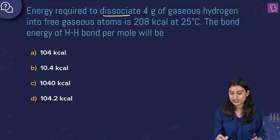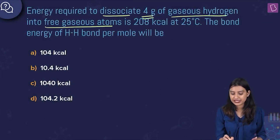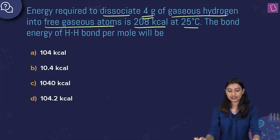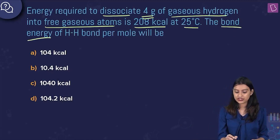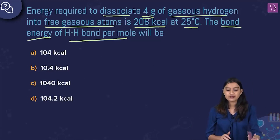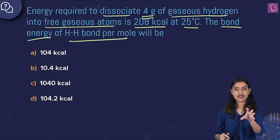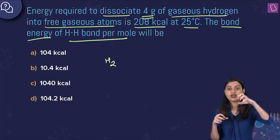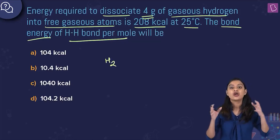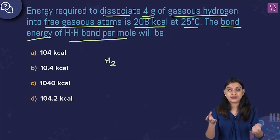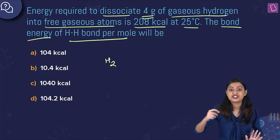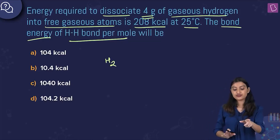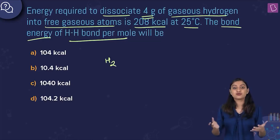Here they are saying: energy required to dissociate 4 grams of gaseous hydrogen into free gaseous atoms is 208 kilocalories at 25 degrees. The bond energy of the H-H bond per mole will be what? Basically, you take 4 grams of H2, supply 208 kilocalories of energy, and as a result you get 4 grams of free gaseous hydrogen atoms.